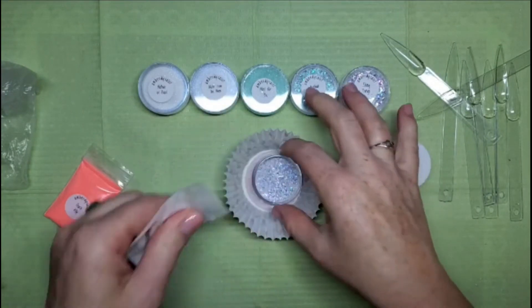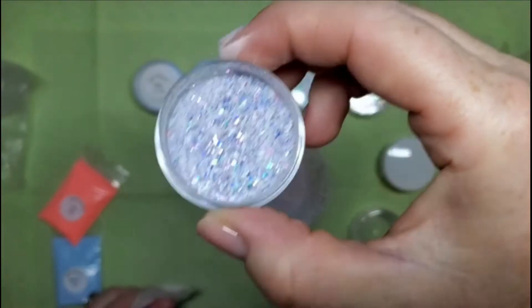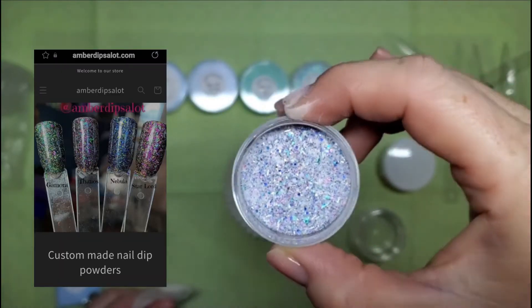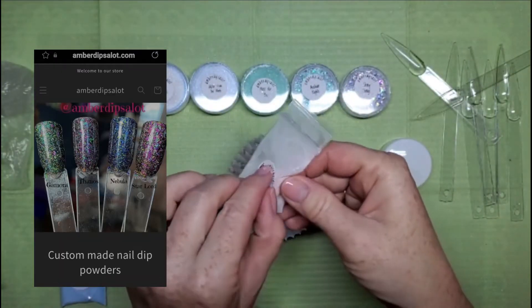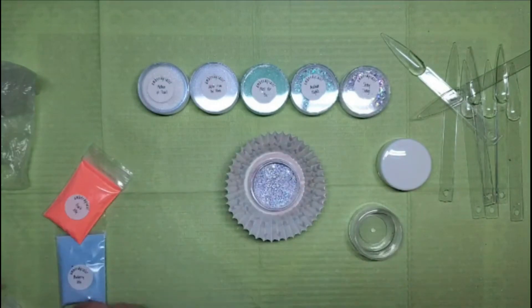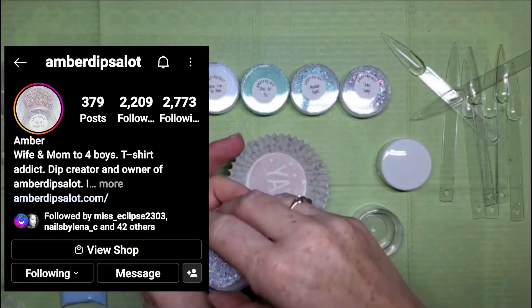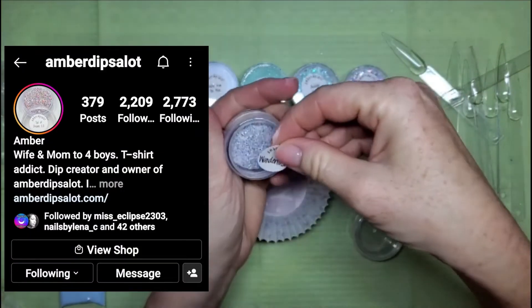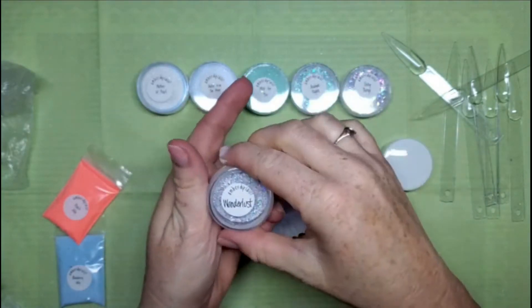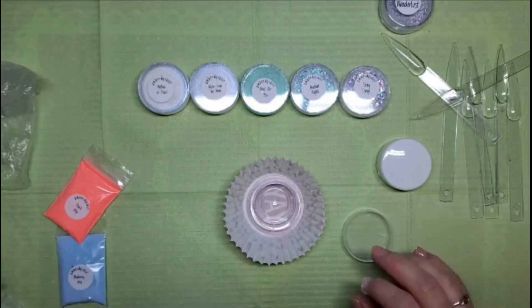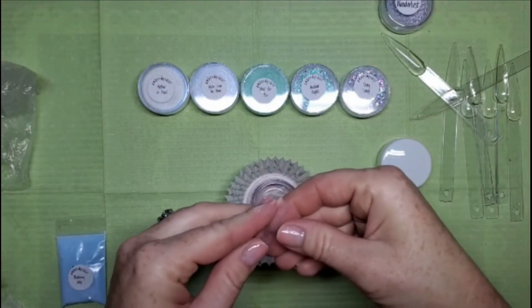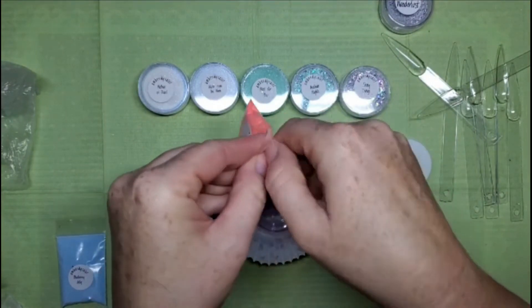You can order these from Amber's website, which is amberdipsalot.com, and she also has an Instagram where she posts all her colors, you know, new shades that she makes. They're just so pretty! Make sure you follow her on Instagram and check out her website. Everything will be linked down below.